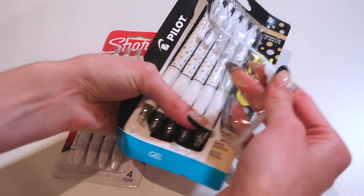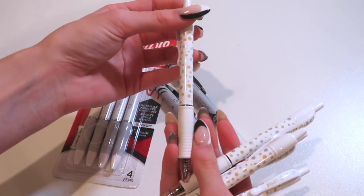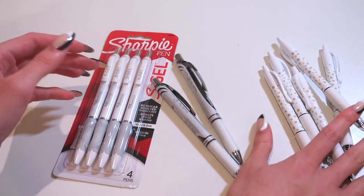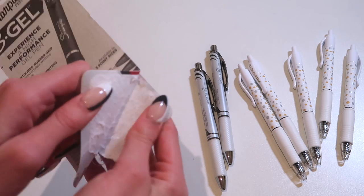These ones are really cute, the barrels are just so fun with these silver and gold polka dots. I also got white barrels of everything just because it matches my aesthetic, and then I also got these Sharpie gel pens.